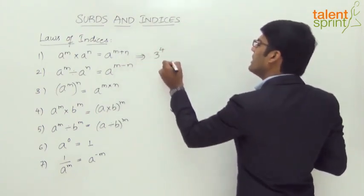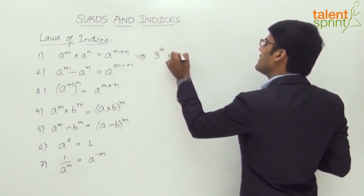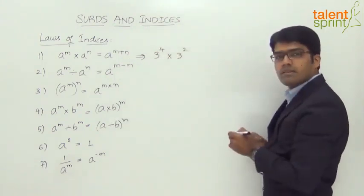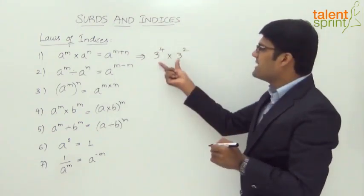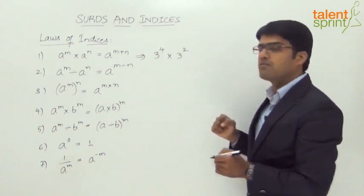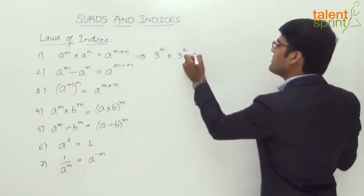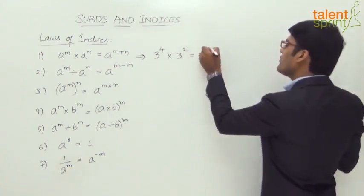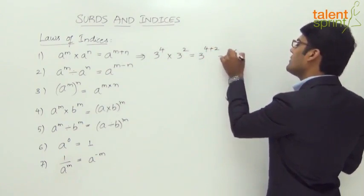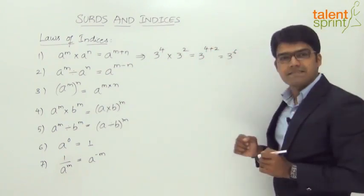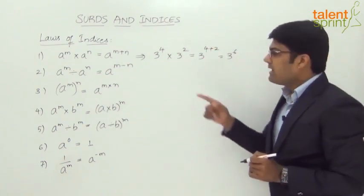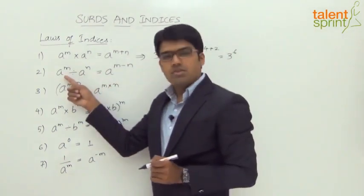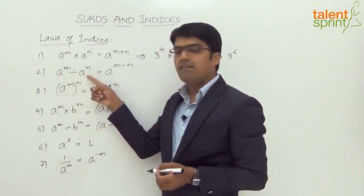For example, 3 to the power of 4 multiplied by 3 to the power of 2 — the bases are equal and in multiplication form, so this can be written as 3 to the power of 4 plus 2, which is 3 to the power of 6.